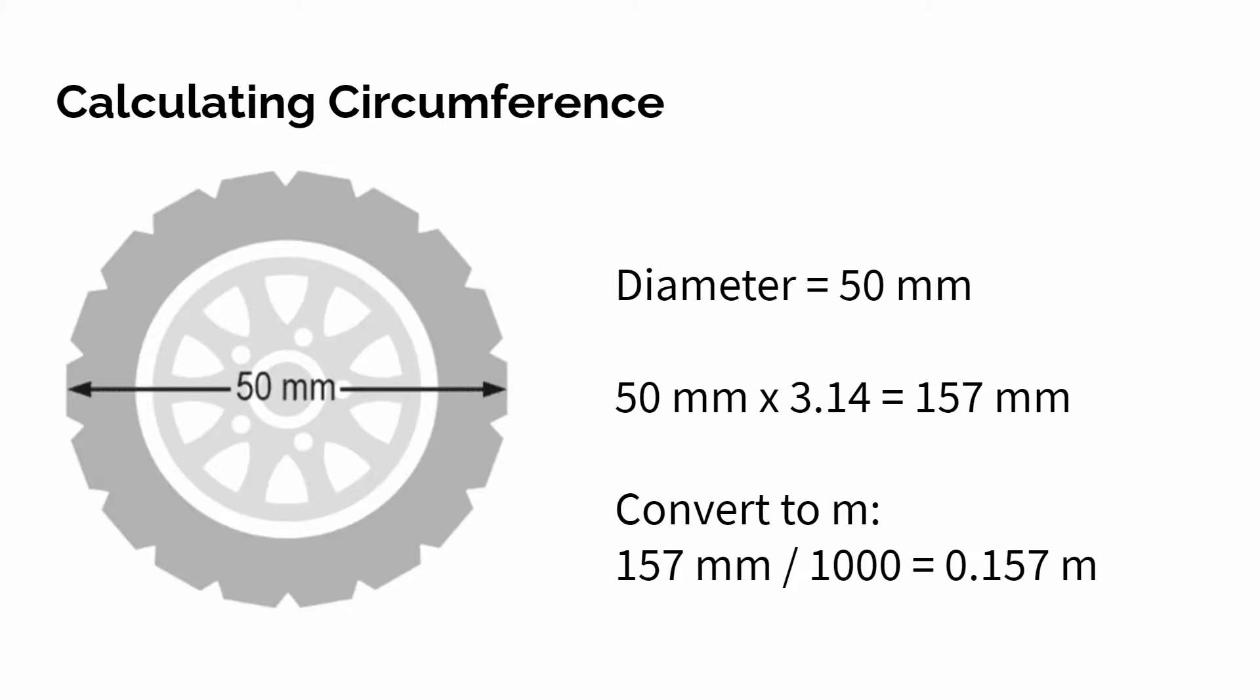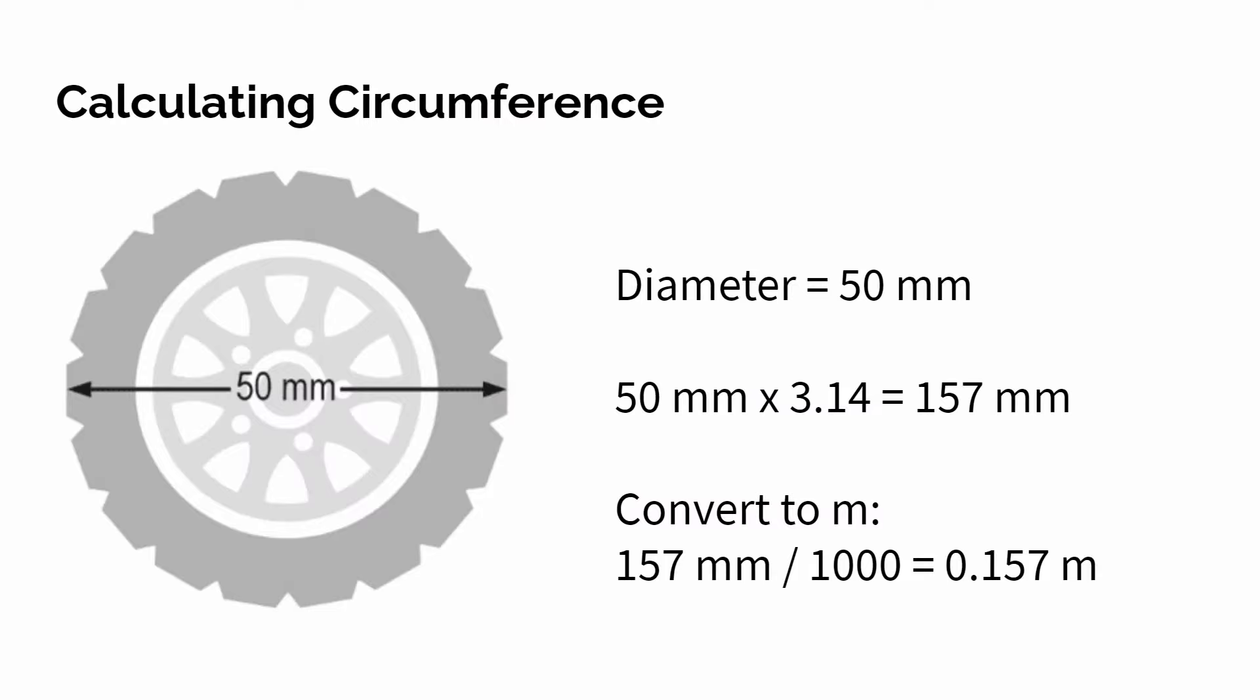Let me give you an example of that math. Say you have a vehicle that has a tire with a diameter of 50 millimeters. You're then going to multiply that number by 3.14, which is pi. In this case it gives us 157 millimeters. In this activity we're going to be working with a meter tape, so why don't we try converting that to meters. You take 157 millimeters and divide that by 1,000, and that gives us 0.157 meters.